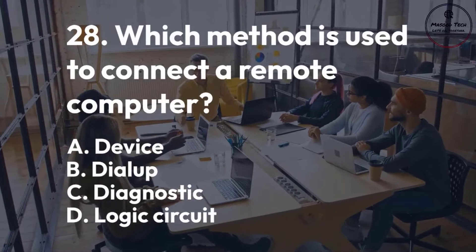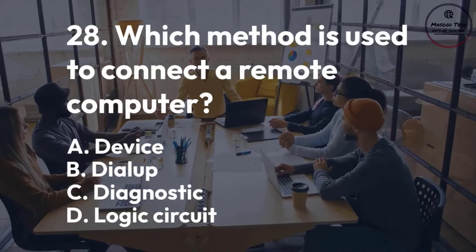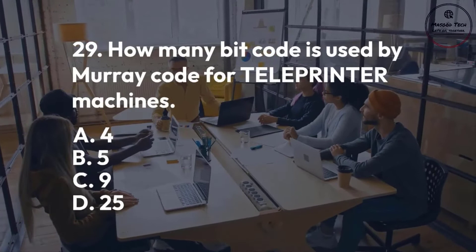Number 29. How many bit code is used by Murray code for teleprinter machines? A. 4. B. 5. C. 9. D. 25. Correct answer is B.